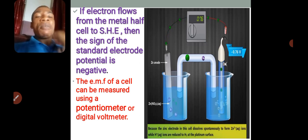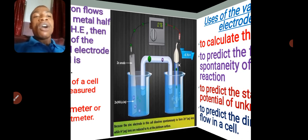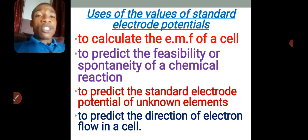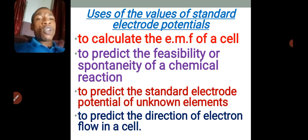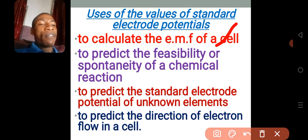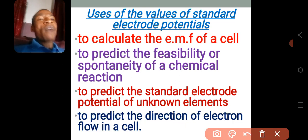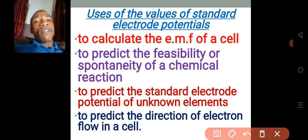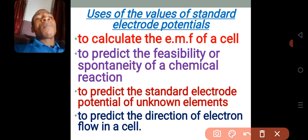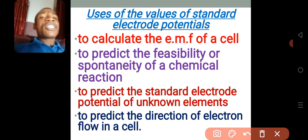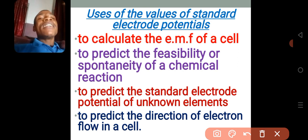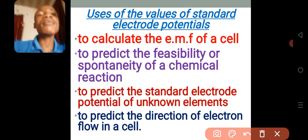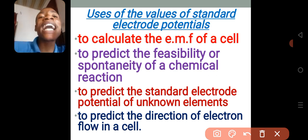What are the uses of the values of standard electrode potential? Number one, it can be used to calculate the EMF of a cell — that is what we use the electrode potentials of the two electrodes for, and I will cover this in the next video. Number two, it can help us predict the spontaneity of a chemical reaction — spontaneity means feasibility, that is, whether a cell will work or not. We can determine this from the values of standard electrode potential.